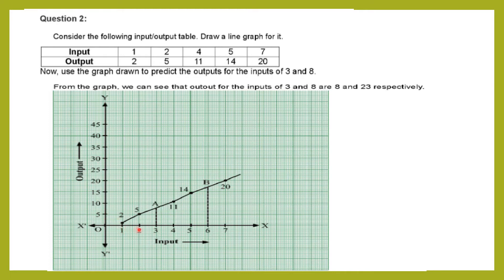For input 2, the output is 5. For input 4, the output is 11. For input 5, the output is 14. For input 7, the output is 20. Now you are going to join all the points to get a smooth line graph. This graph also depicts the output for the inputs of 3 and 8.